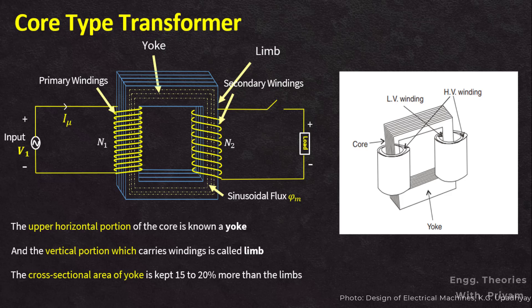The laminations are inserted later on. The general form of these coils may be circular, oval, or rectangular. The circular cylindrical coils are used in most types of core transformers because of their mechanical strength. Such cylindrical coils are wound in helical layers, with different layers insulated from each other by paper, cloth, cardboard, or cooling ducts.